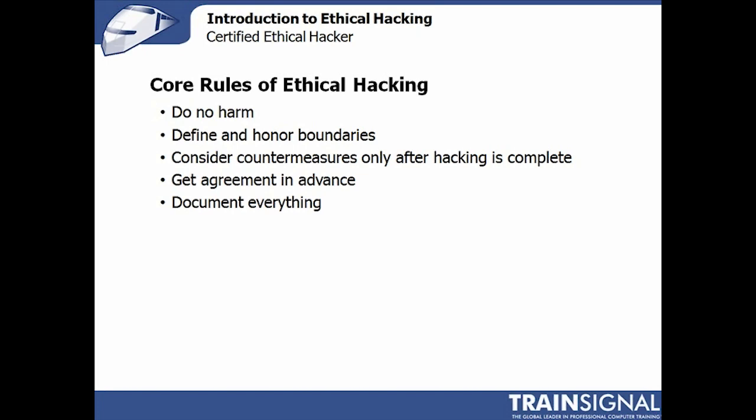Ethical hacking is also rooted in boundaries — understanding what systems can and cannot be attacked. For example, an online database critical to customer data or transactions should never be attacked by an ethical hacker unless it's specifically included within the agreed boundaries. Most businesses running 24 hours, 7 days will not want an ethical hacker to approach any critical business systems because it could simply impact business. Understanding those boundaries upfront and honoring them is absolutely critical.